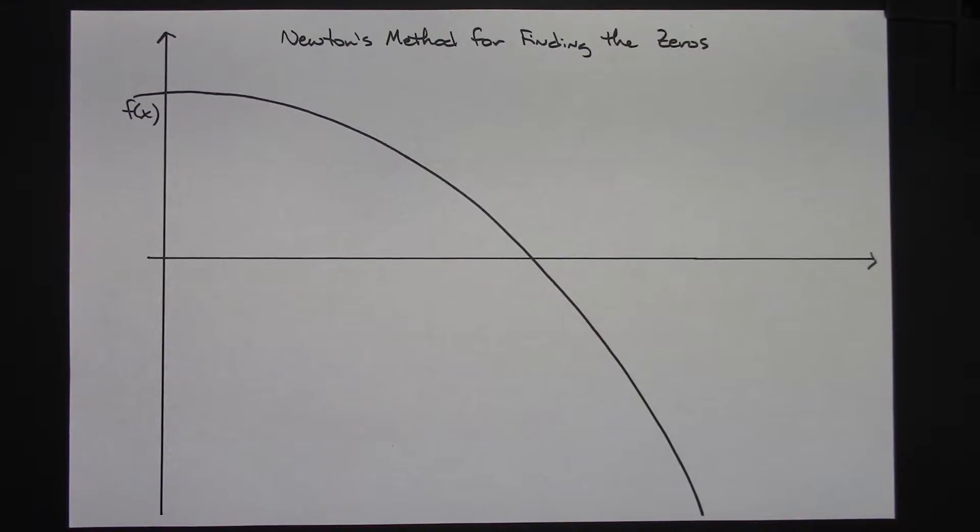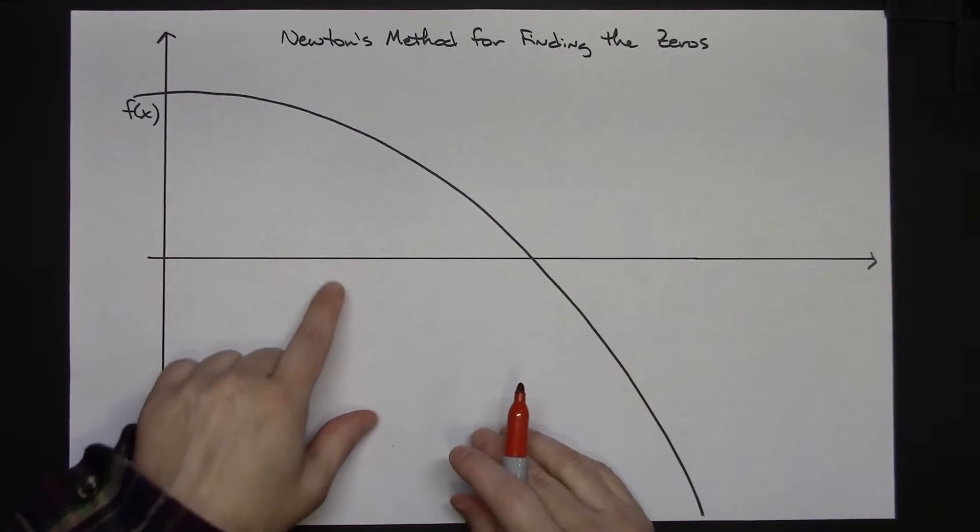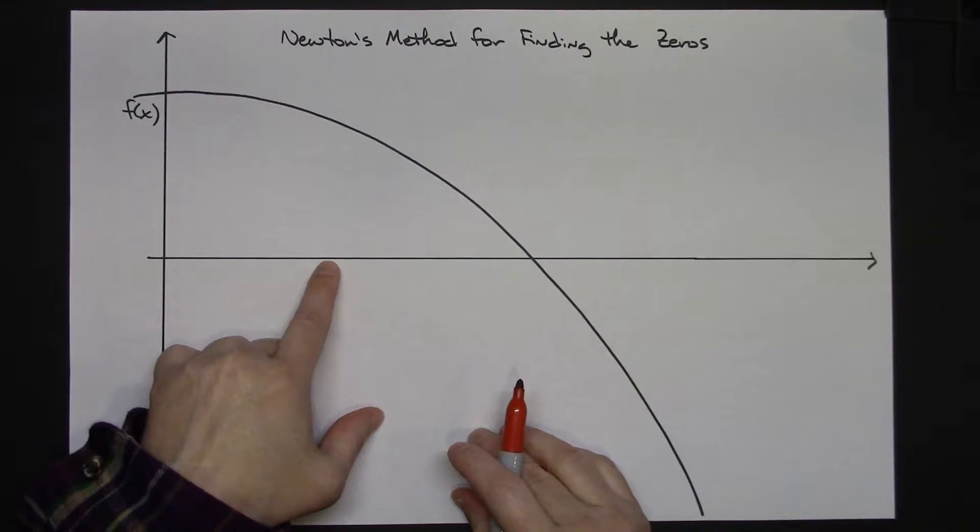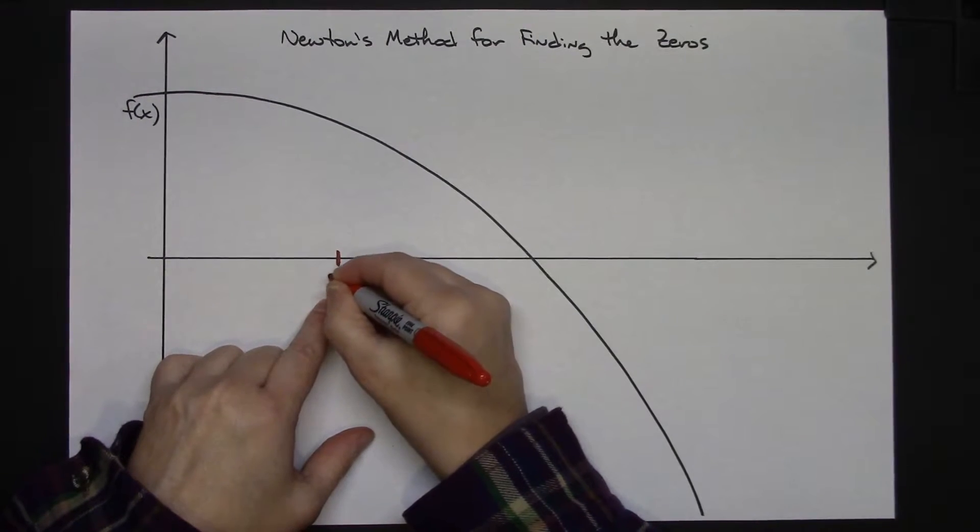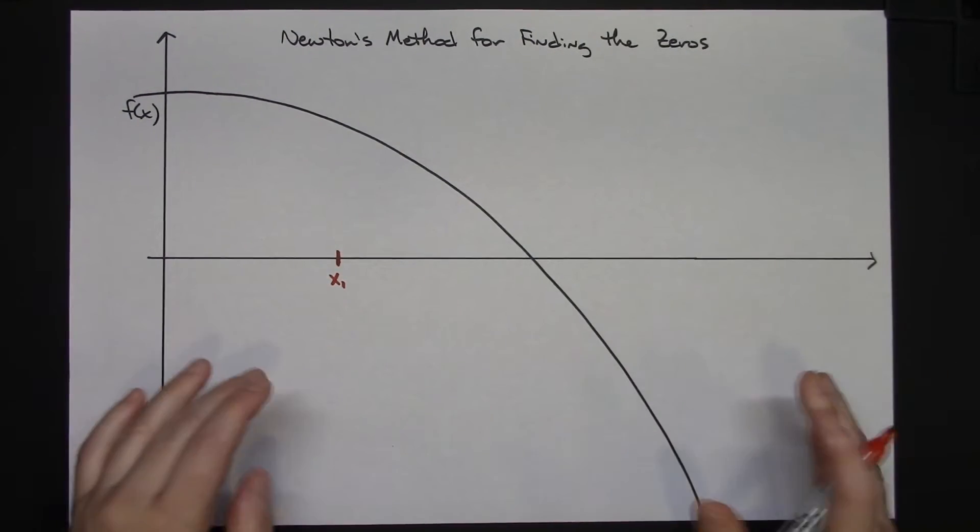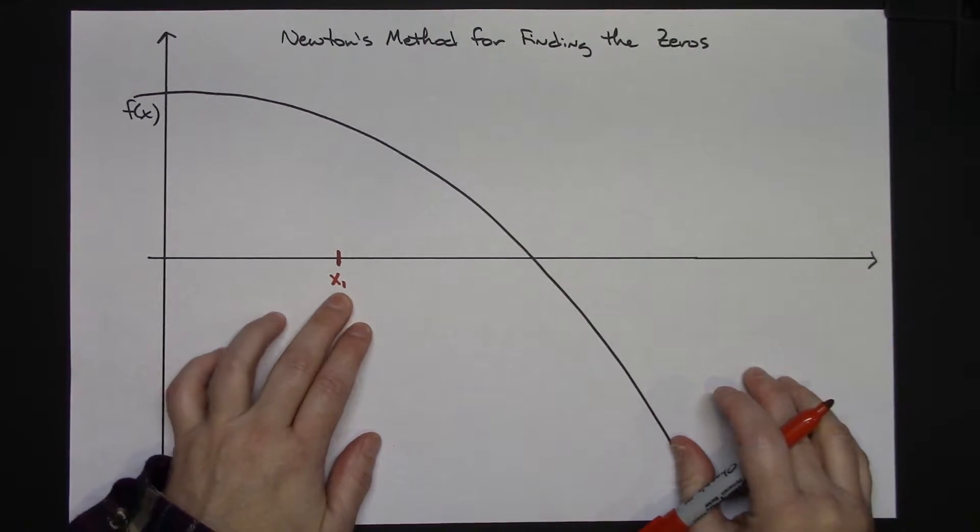I'm going to make an initial guess somewhere along my x-axis. Let's say that maybe my first guess is right here. That first guess needs to be kind of close to your zero so it's not really far away, but it can be anywhere you want.